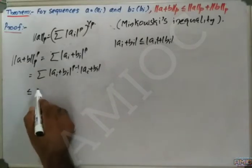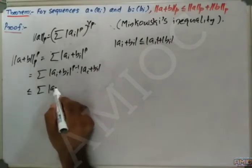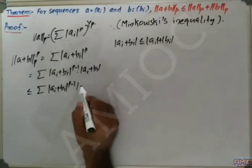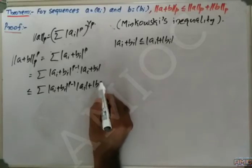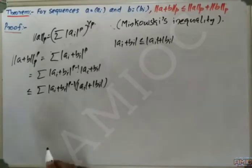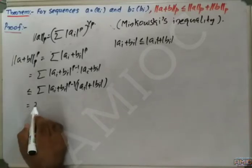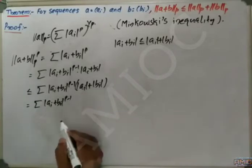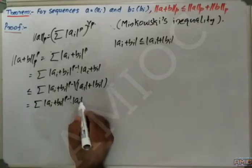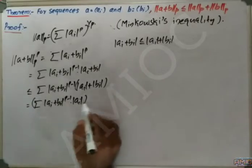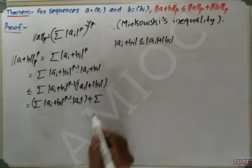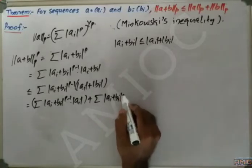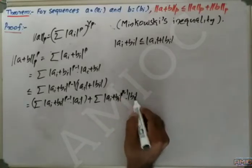So this will be less than or equal to Σ|a_i + b_i|^(p-1) · |a_i + b_i|, which distributes to: Σ|a_i + b_i|^(p-1) · |a_i| + Σ|a_i + b_i|^(p-1) · |b_i|.